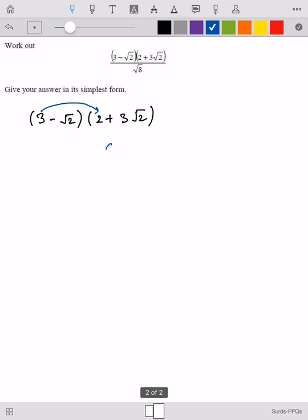3 times 2 is 6. 3 times 3 square root 2 is 9 square root 2.